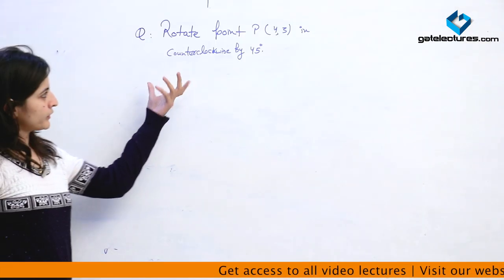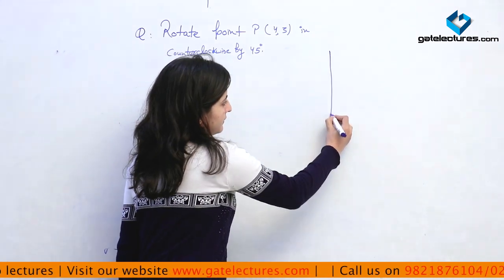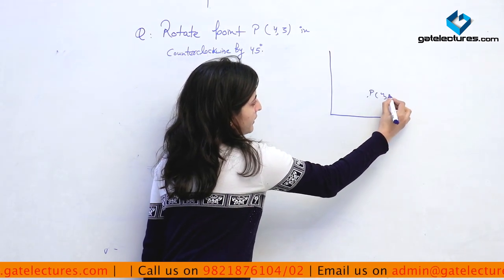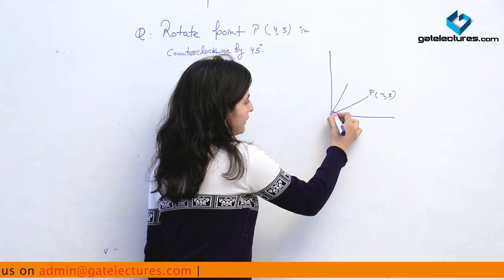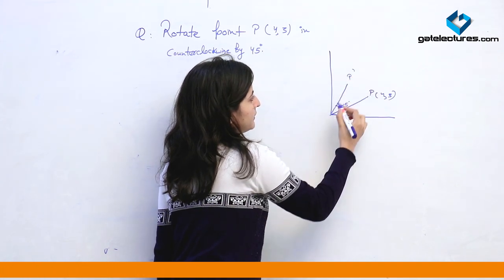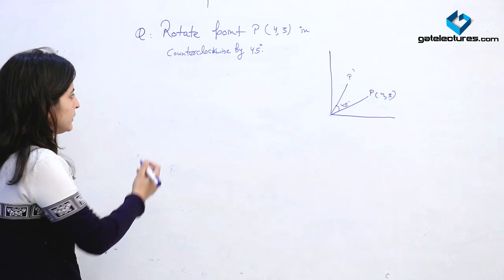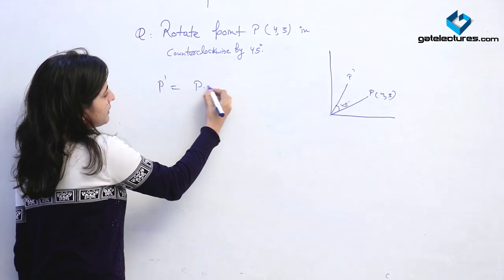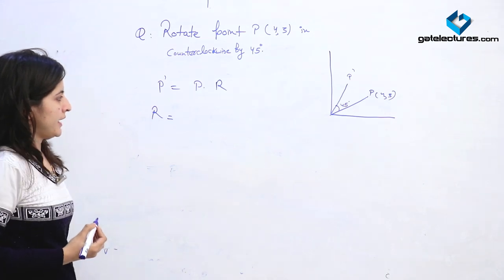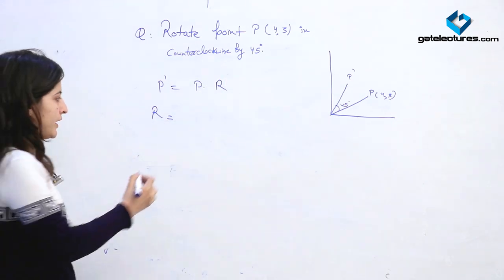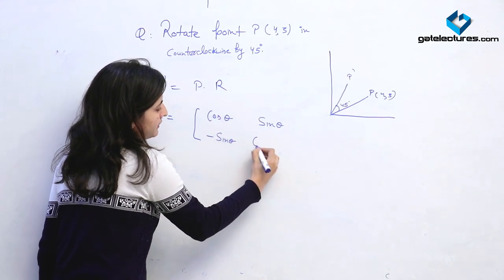Now we will see a numerical example. The question is: rotate the point P with coordinate (4, 3) counterclockwise by 45 degrees. We need to find the coordinates of P dash when applying the rotation transformation. We know P dash equals P dot R, so first we find the rotation matrix R for counter-clockwise rotation: R equals [cos theta, sin theta; minus sin theta, cos theta].